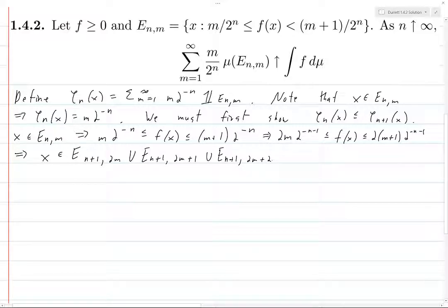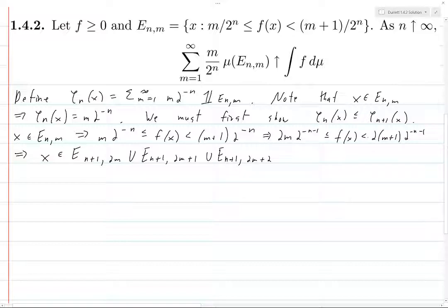Since f(x) must satisfy a strict inequality when x is in Eₙ,ₘ, that case can't happen. So we are good — x is going to be in one of these three sets: Eₙ₊₁,₂ₘ, Eₙ₊₁,₂ₘ₊₁, or Eₙ₊₁,₂ₘ₊₂.